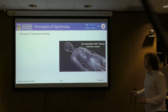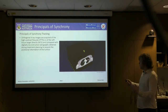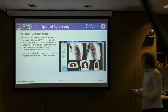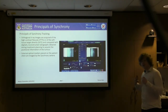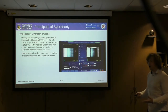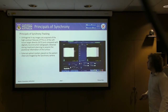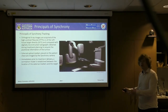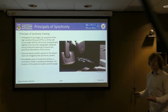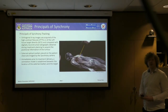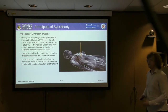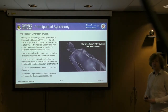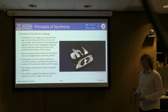Briefly covering the basic principles of Synchrony tracking: orthogonal x-ray images are acquired of either the fiducials or the target directly, and compared to the CT dataset to acquire the positional information of the tumour. Simultaneously, external optical markers placed on the patient's chest are tracked by the Synchrony camera. By acquiring images in conjunction with tracking the patient's chest, a correlation model is established relating chest position to target position. The robot is continuously moved to maintain alignment, and images are updated approximately every 30 seconds to account for changes in real patient respiration.